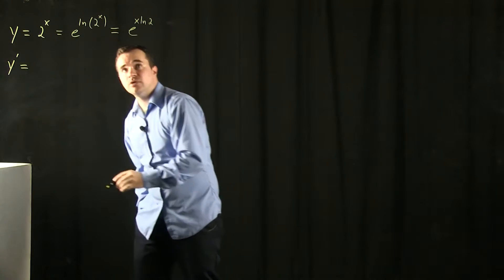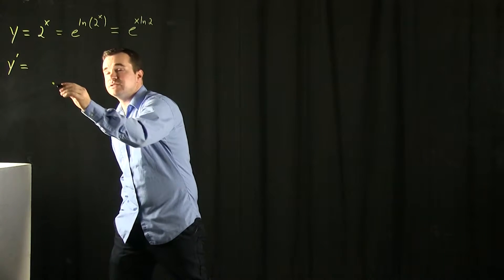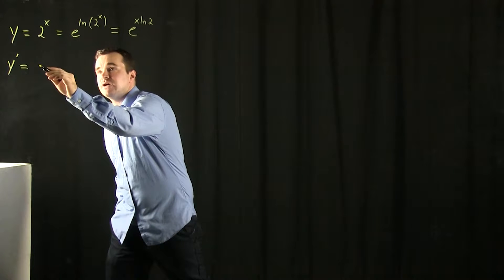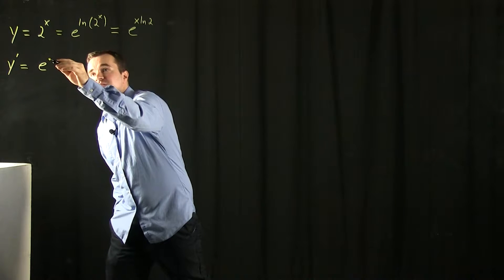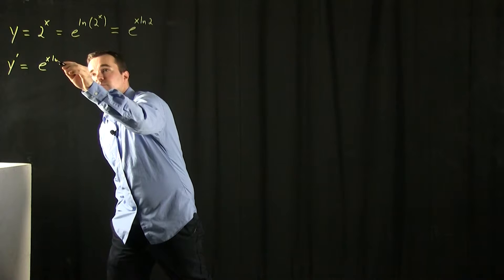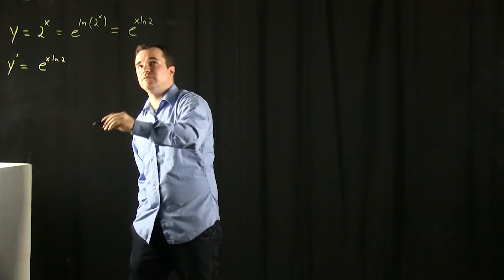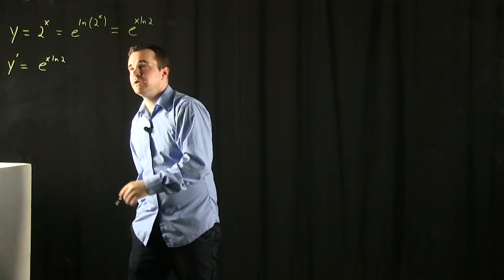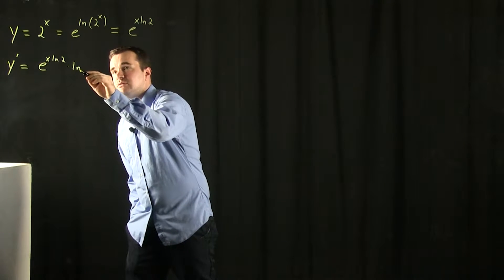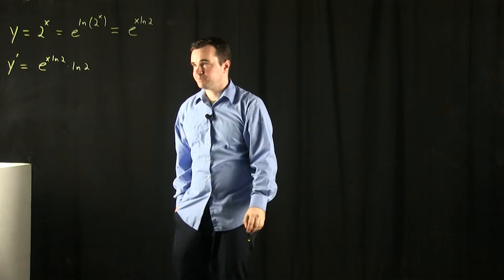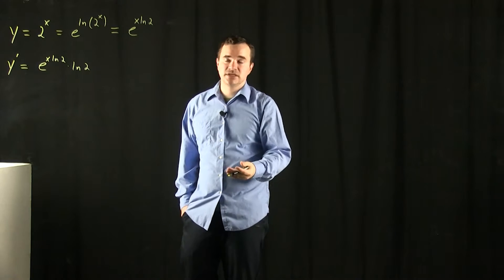So when I use the chain rule, what I'm going to get is the derivative of the outside is just e to the x. And then plug in x times natural log of 2. And now I multiply by the derivative of x times natural log of 2. And that's going to be the natural log of 2. And that is the answer.